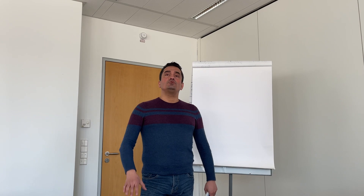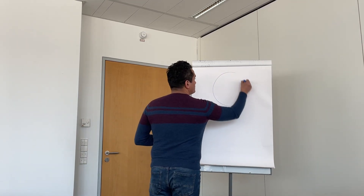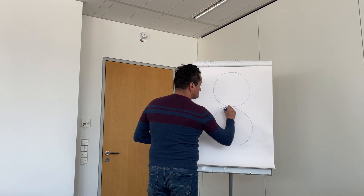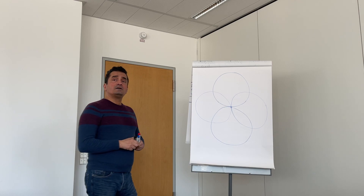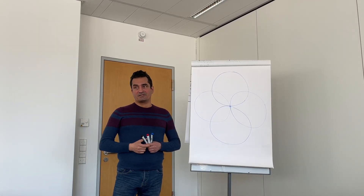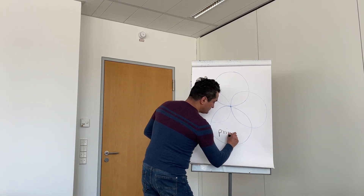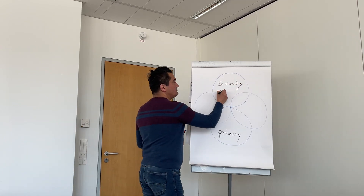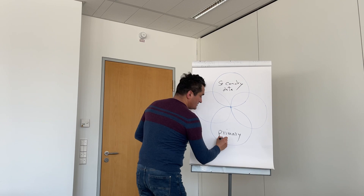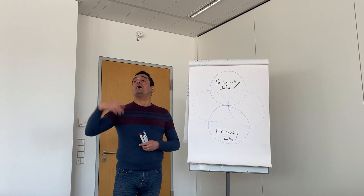For research, you need to know we have two different types of data. I'm making a model to explain the situation. We have two different data we can use in your research. One of them is called primary data, and another one is secondary data. Primary data is about the data you can find by yourself, and secondary data means the research of other people.